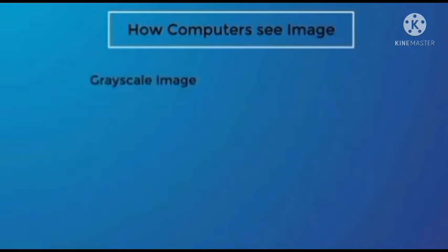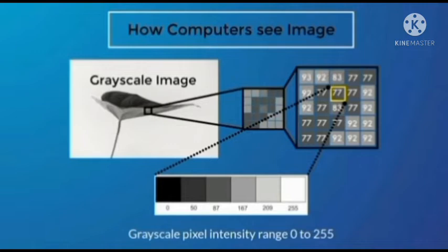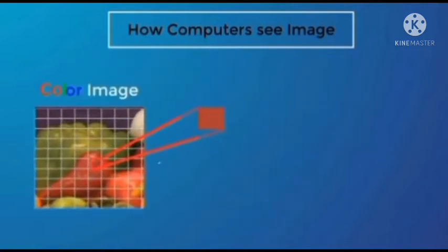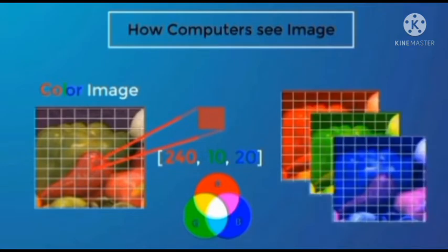For a grayscale or black and white image, each pixel has one value ranging between 0 to 255. But for a color image, each pixel has three values, because a color image consists of three channels, each representing red, green, and blue color.